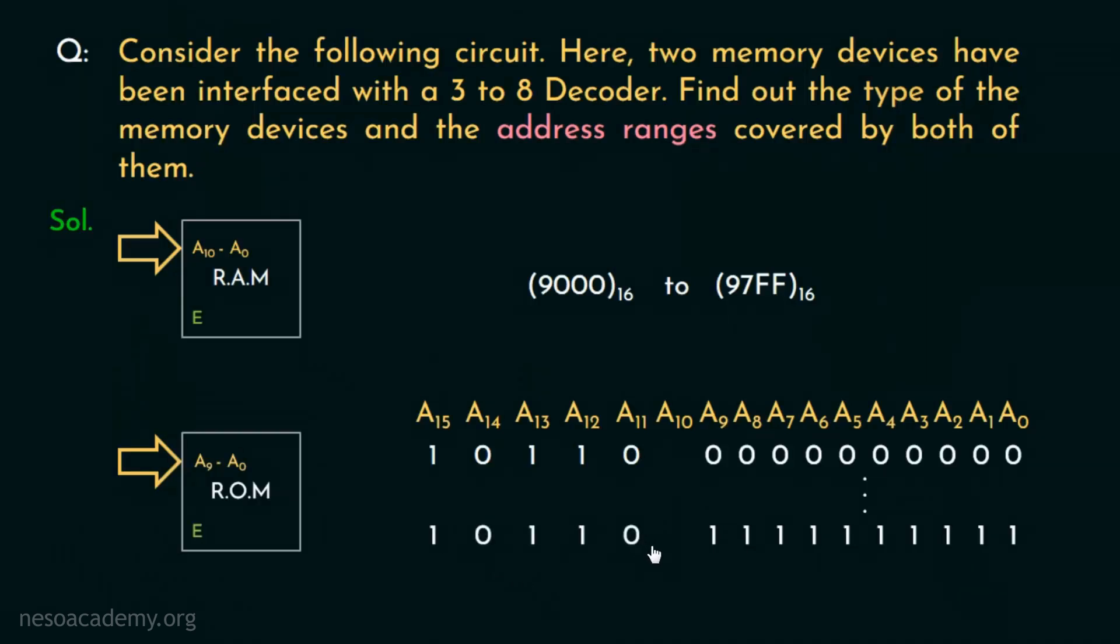Now the question remains, what should be the value for the address line A10? Well, since it is of no significance for this particular organization, we will treat it as a don't care combination. Now what does a don't care combination mean? It means we can either place 0 or 1 over here. So let's convert these addresses to hexadecimal as well.